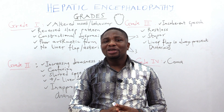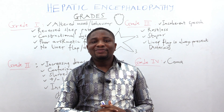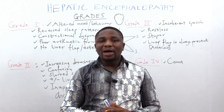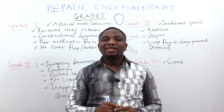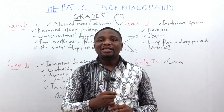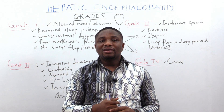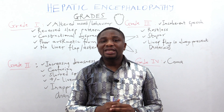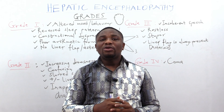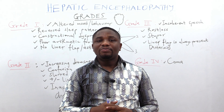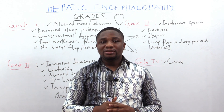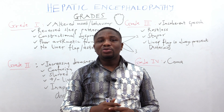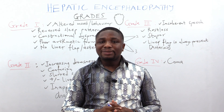Finally, Grade 4 hepatic encephalopathy is characterized by coma. You should know that the greater the grade of hepatic encephalopathy, the worse the prognosis — meaning Grade 4 will have the worst prognosis compared to the rest, followed by Grade 3, then Grade 2, then Grade 1 in that order.